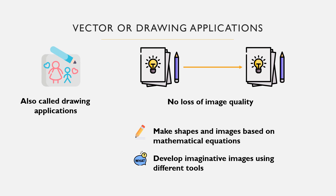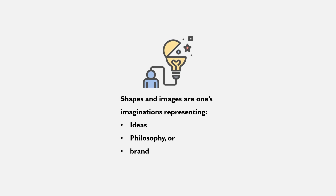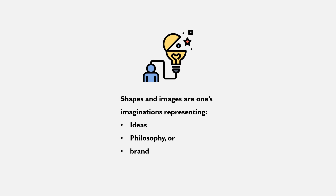When each of the individual created parts is brought together at will, the developer can produce an imaginative image. Most of the images made with vector graphic packages are expressions of one's imagination and represent one's creative mindset. Objects and images made may not look real, but they represent one's idea, philosophy, or a brand.